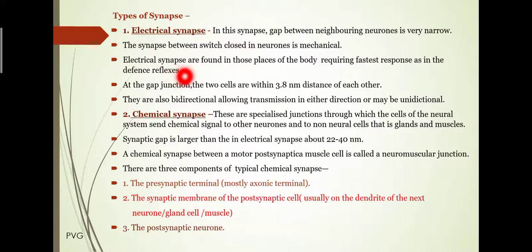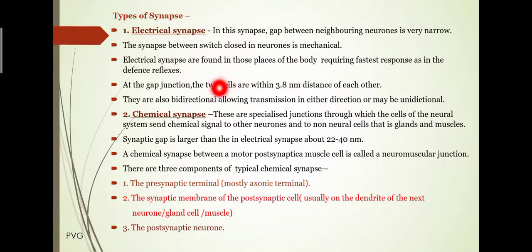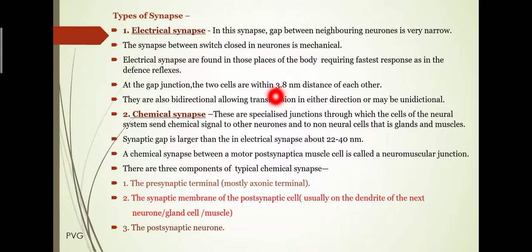Electrical synapses are found in those places of the body which require the fastest response in the defense reflex. The gap in electrical synapses is very small — approximately 3.18 nanometers distance between neurons.